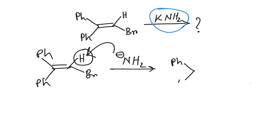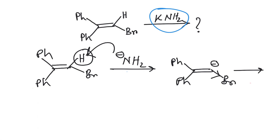That will generate this carbanion. Now, if you know about carbene formation, this kind of carbanion is stabilized because of the inductive electron withdrawal of the substituent — that is, the halogen. However, they are not stable indefinitely and eventually collapse.